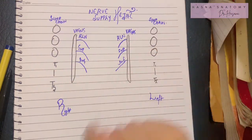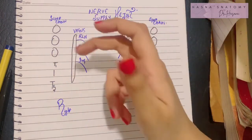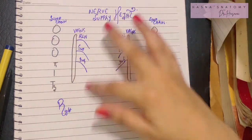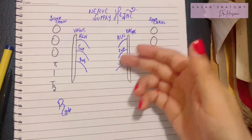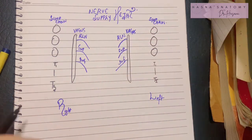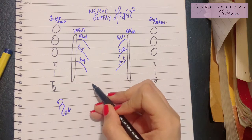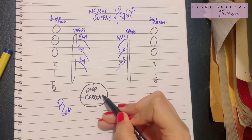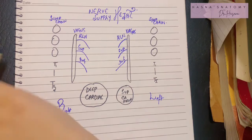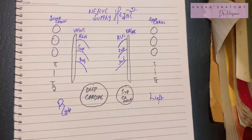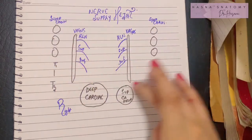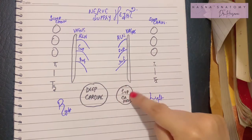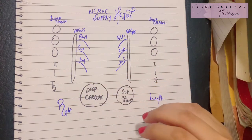We now need to know how these supplies reach the heart. The heart has two plexuses: the deep cardiac plexus and the superficial cardiac plexus. The autonomic nerves supply the heart via these superficial and deep cardiac plexuses.